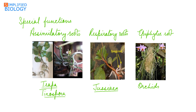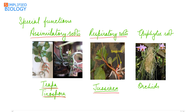Next is modification of adventitious roots to perform special functions. First are assimilatory roots: in these, the roots become green in color, carrying out the function of photosynthesis or carbon dioxide assimilation. Example: Trapa, the water chestnut, and Tinospora. Next are respiratory roots, seen in aquatic plants like Jussiaea. These are white spongy roots that float above the level of water and help in exchange of gases.